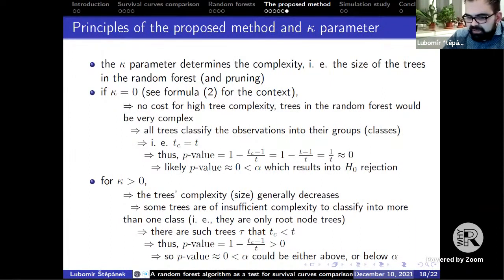On the other hand, if κ is larger than 0, the tree's complexity or size generally decreases, and consequently not all of the trees are of sufficient complexity to classify into more than one class. So Tc is lower than T and p-value as a consequence is larger than 0 and could be either above or below the α level.